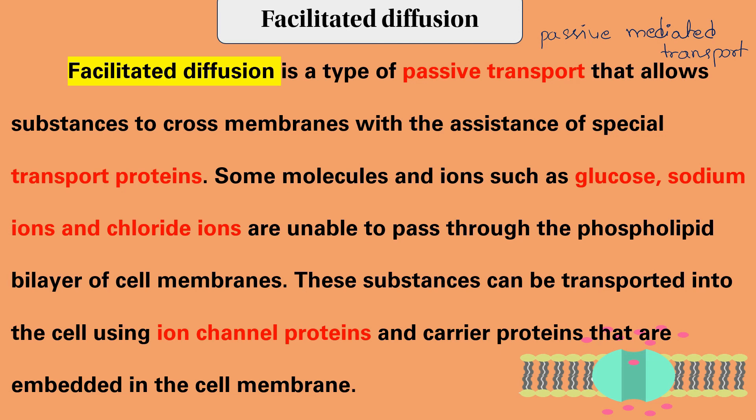Some molecules and ions such as glucose, sodium ion, and chloride ion cannot pass through the phospholipid layer. The sand membrane — the cell membrane — acts as a barrier. Glucose, sodium ions, and chloride ions cannot cross the lipid membrane directly.